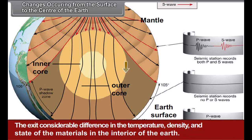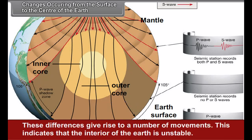There exist considerable differences in the temperature, density, and state of the materials in the interior of the earth. These differences give rise to a number of movements, indicating that the interior of the earth is unstable.